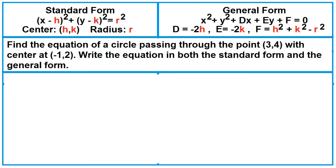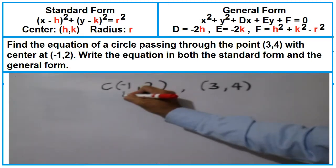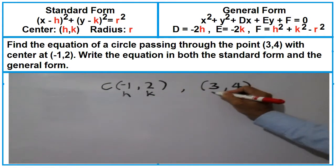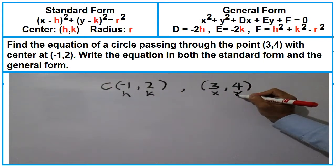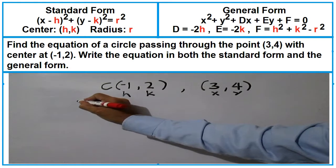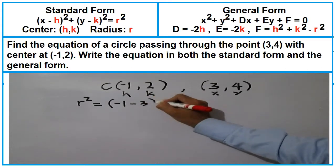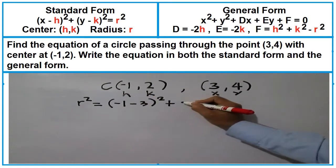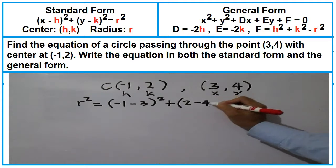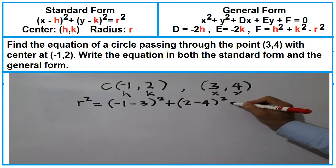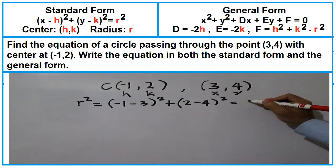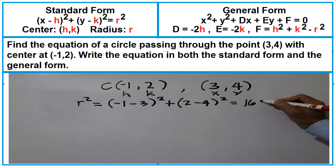Find the equation given the center and a point on the circle. The distance from the center to the point is just the radius. Using the distance formula, R squared equals (-1 minus 3) squared plus (2 minus 4) squared. This equals (-4) squared is 16, plus (-2) squared is 4, which equals 20.